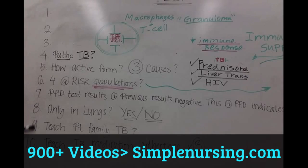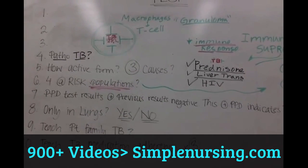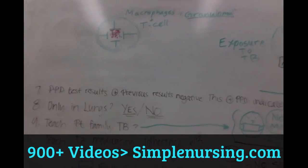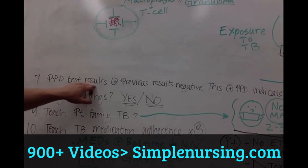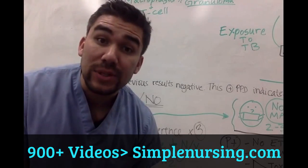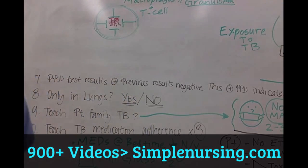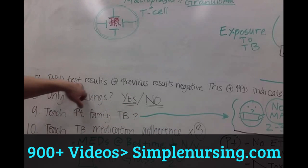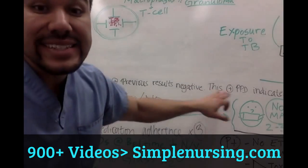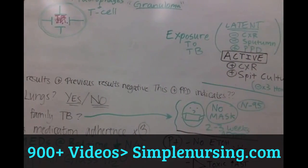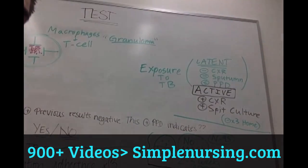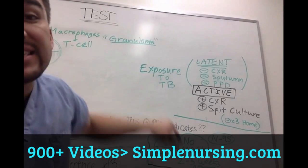Let's go over our last four. You go for a PPD test — just because you're a nurse working in a hospital, you go for a routine purified protein test where they stick it underneath your arm. Your previous results were negative. This time your PPD test is positive. Now what does that indicate? Positive TB test under your skin — what does it mean?